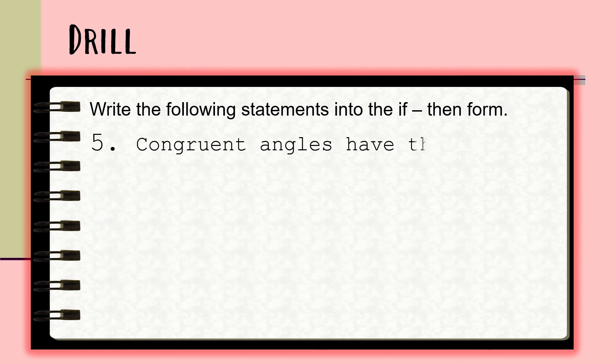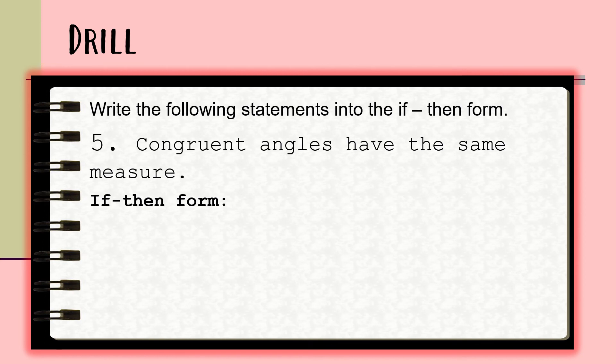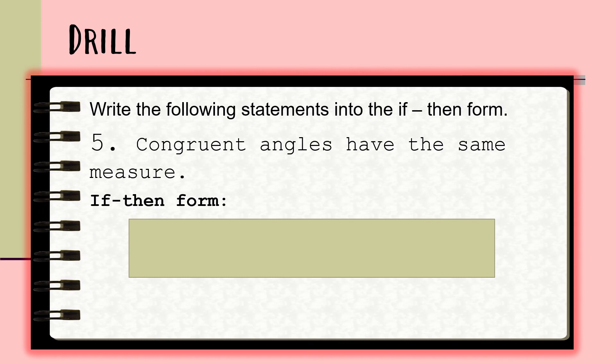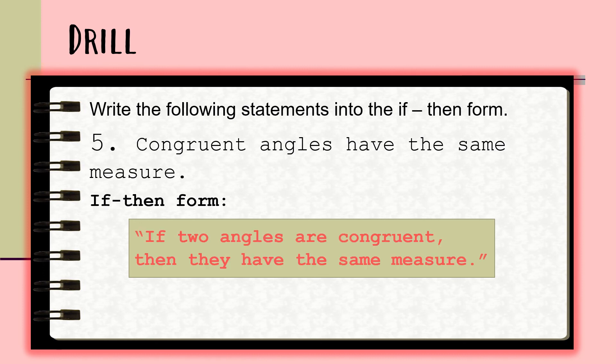For number five, the statement is: 'Congruent angles have the same measure.' Transform this into an if-then form. The answer is: 'If two angles are congruent, then they have the same measure.' Good job, Grade 8 learners.